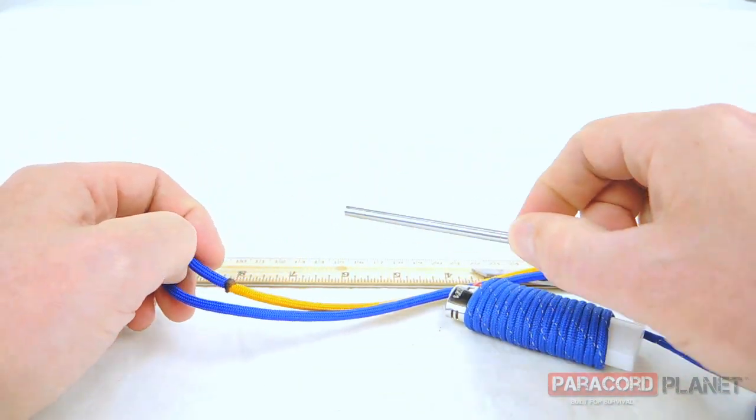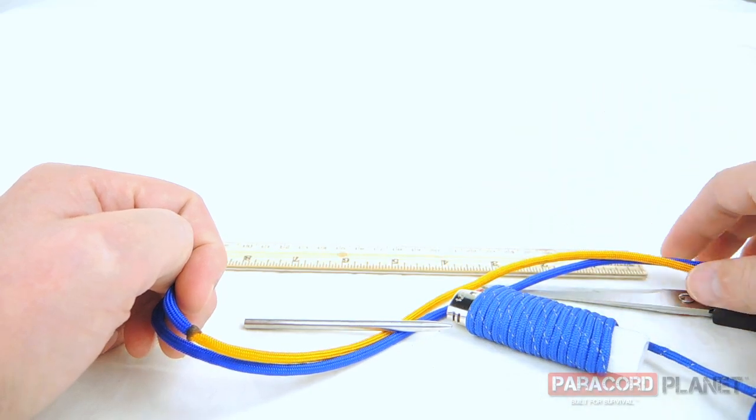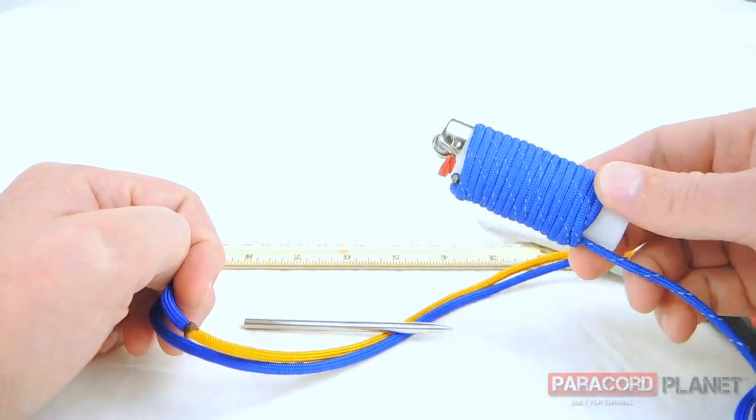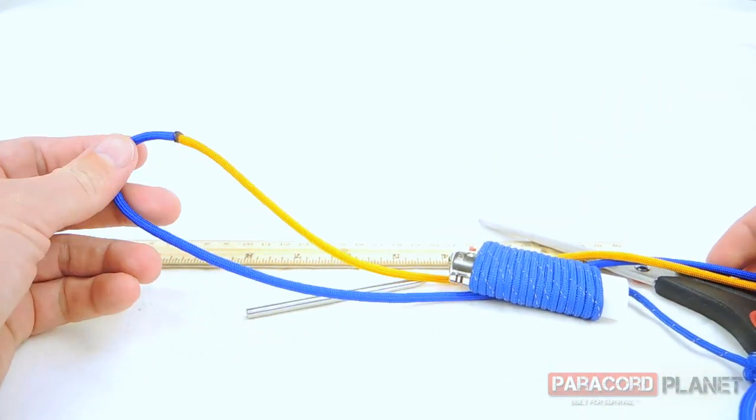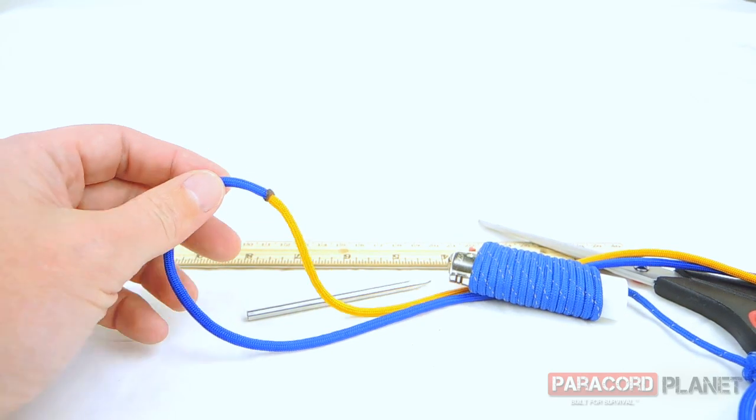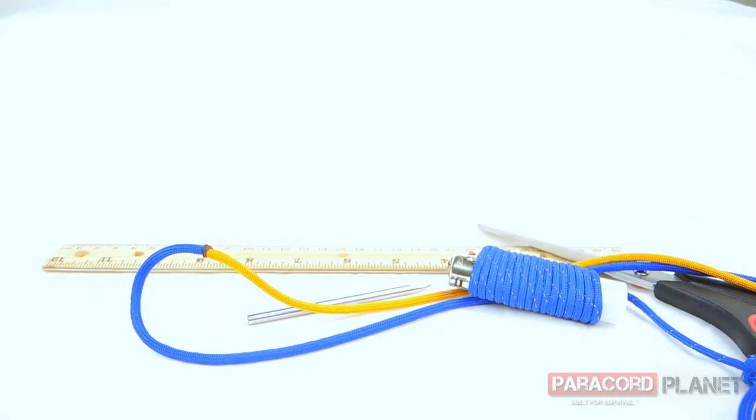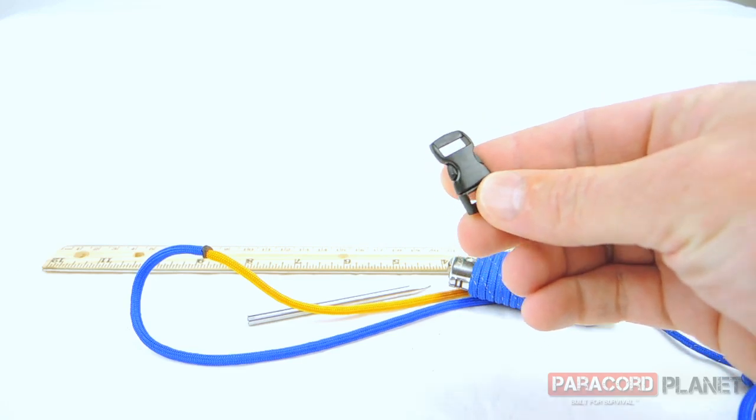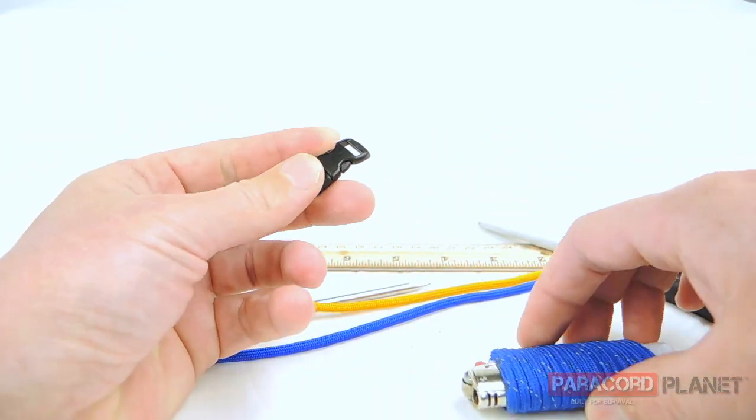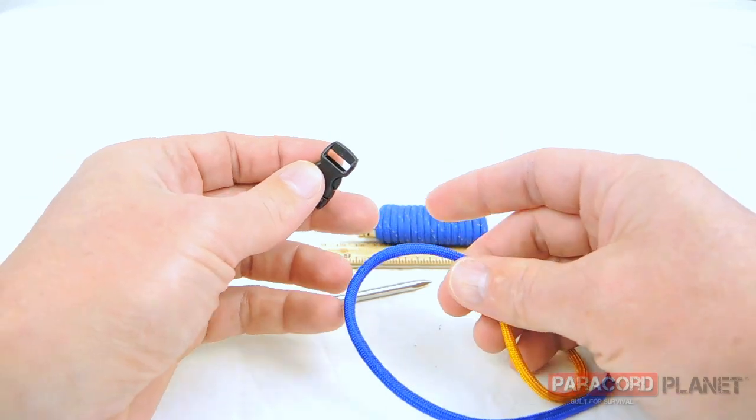I have a fid, just in case, I have a trusty ruler, I have scissors, and I have a lighter. So what we're going to do is take our buckle, a 3 1/8 inch buckle, is what I'm using this time.